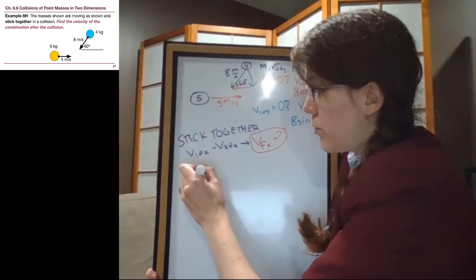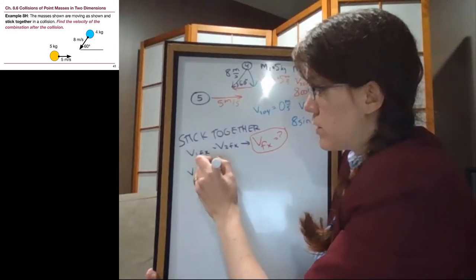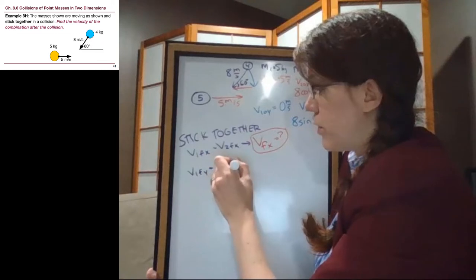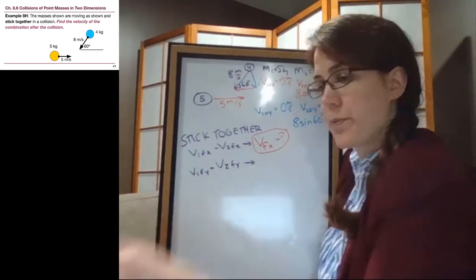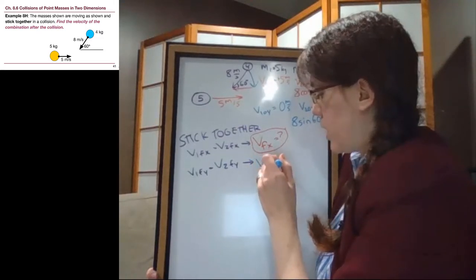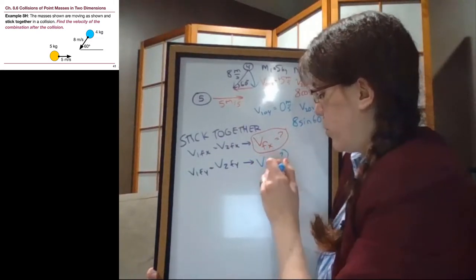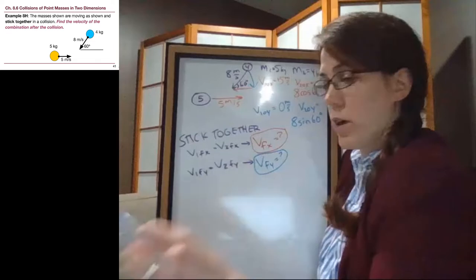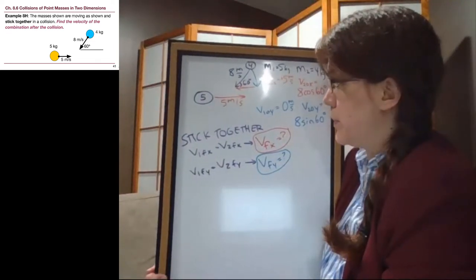And v1 final in the y direction is going to be the same as v2 final in the y direction. And so we only have one v final in the y direction. That's an unknown, but we'll be able to use our y momentum conservation equation.